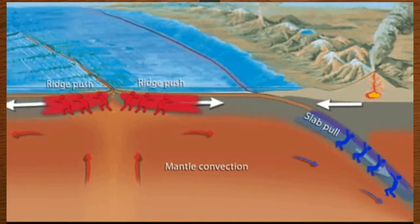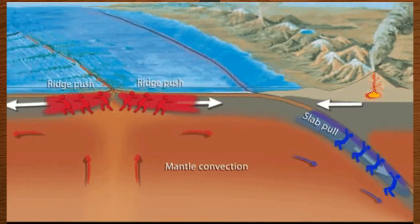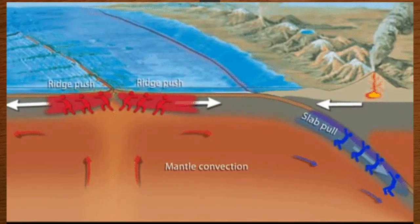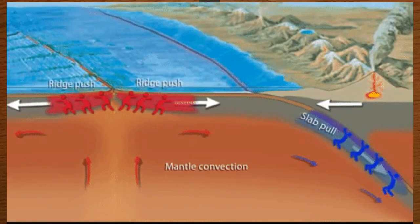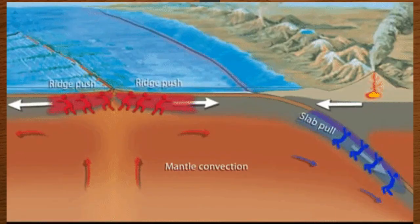Here is a bigger picture of the forces that make the lithospheric plates move. First is mantle convection, where hot magma goes up and cold fluid goes down. Next is slab pull, where the subducting plate pulls down the trailing slab to the subduction zone. And ridge push, where the older oceanic crust sinks due to its weight and moves toward the trench at the subduction zone.